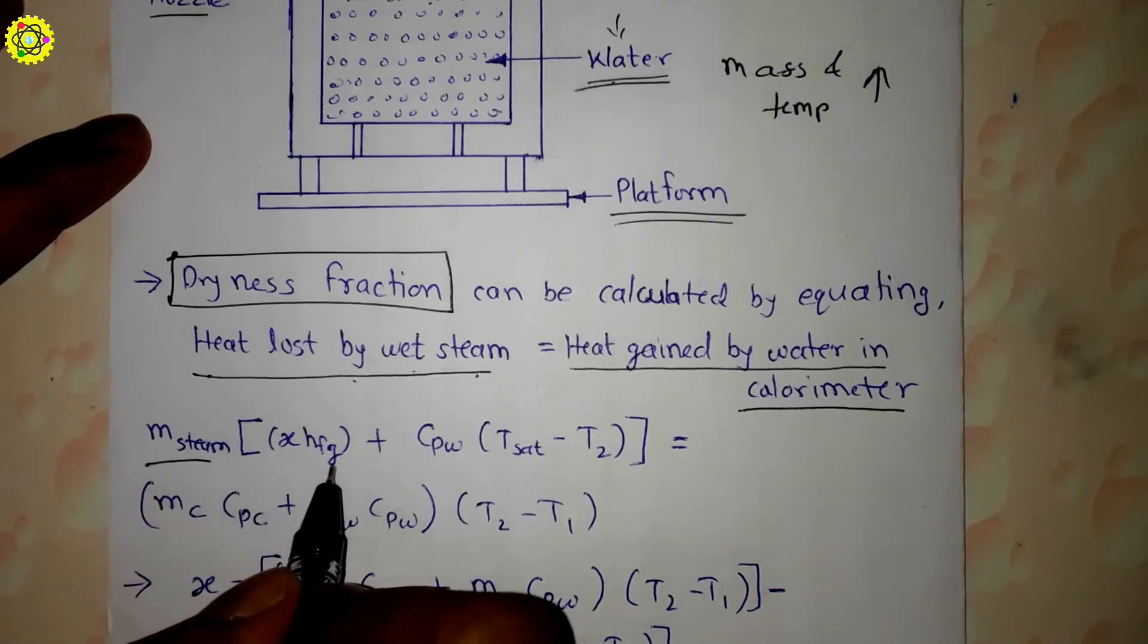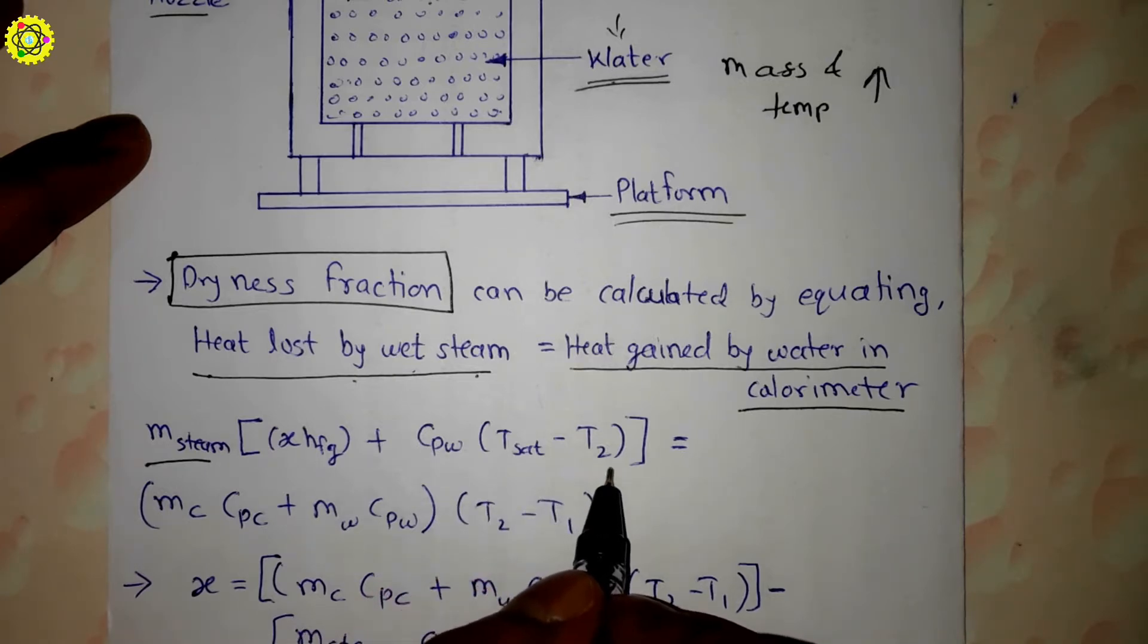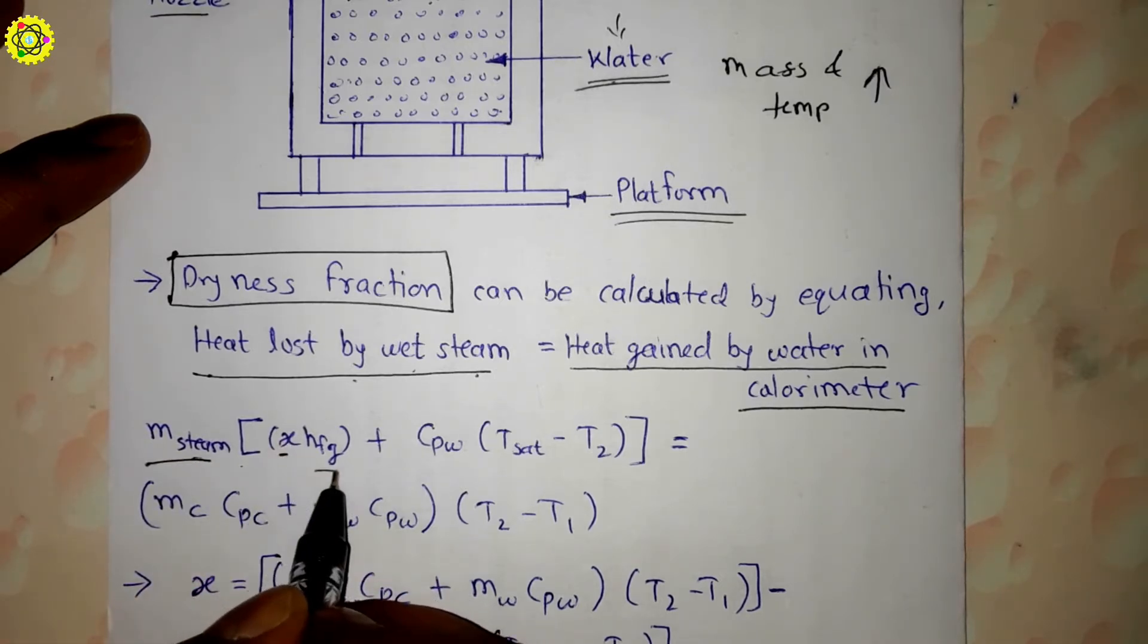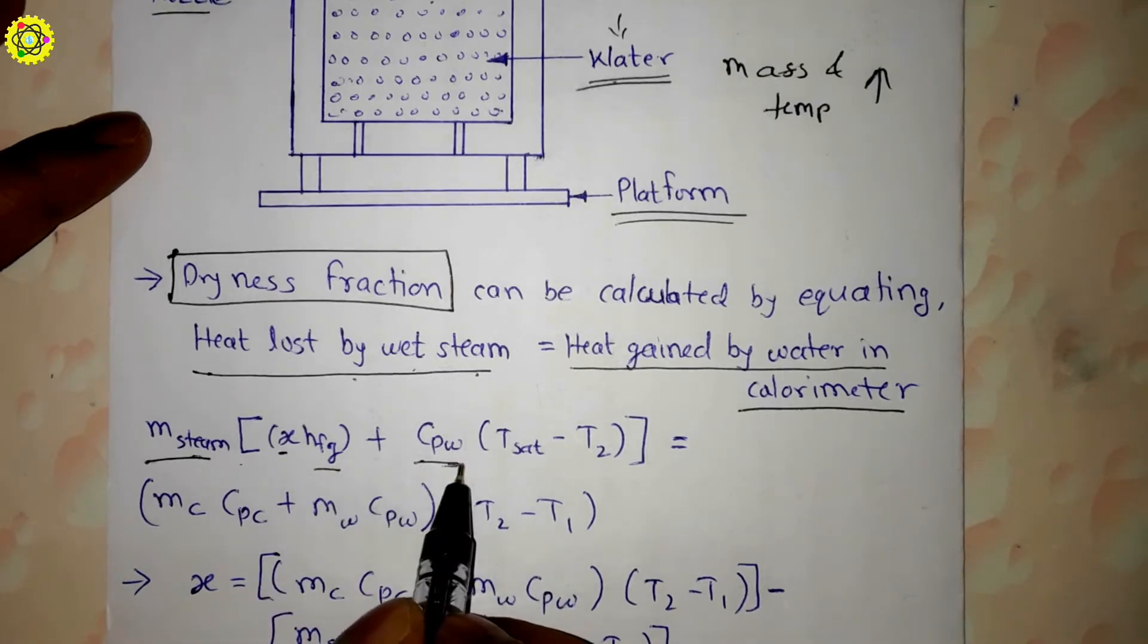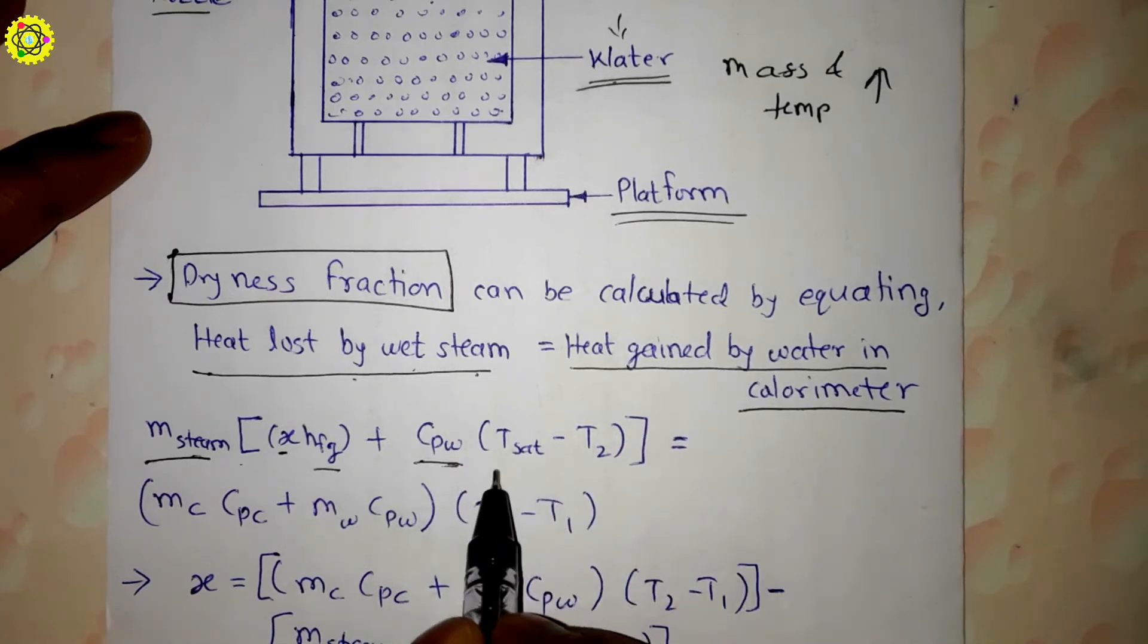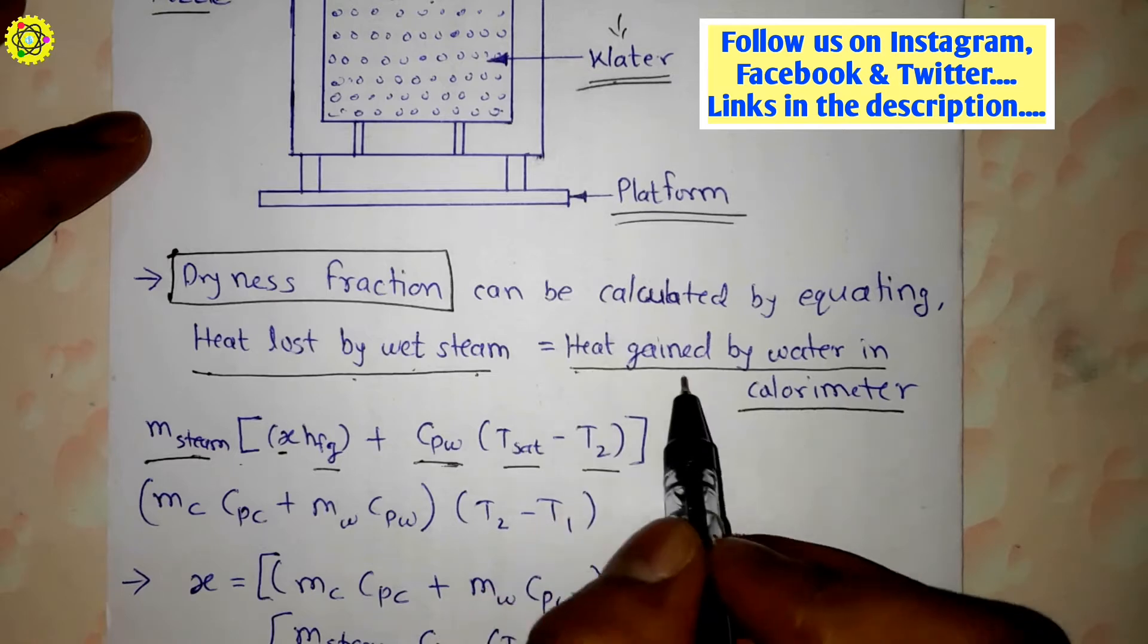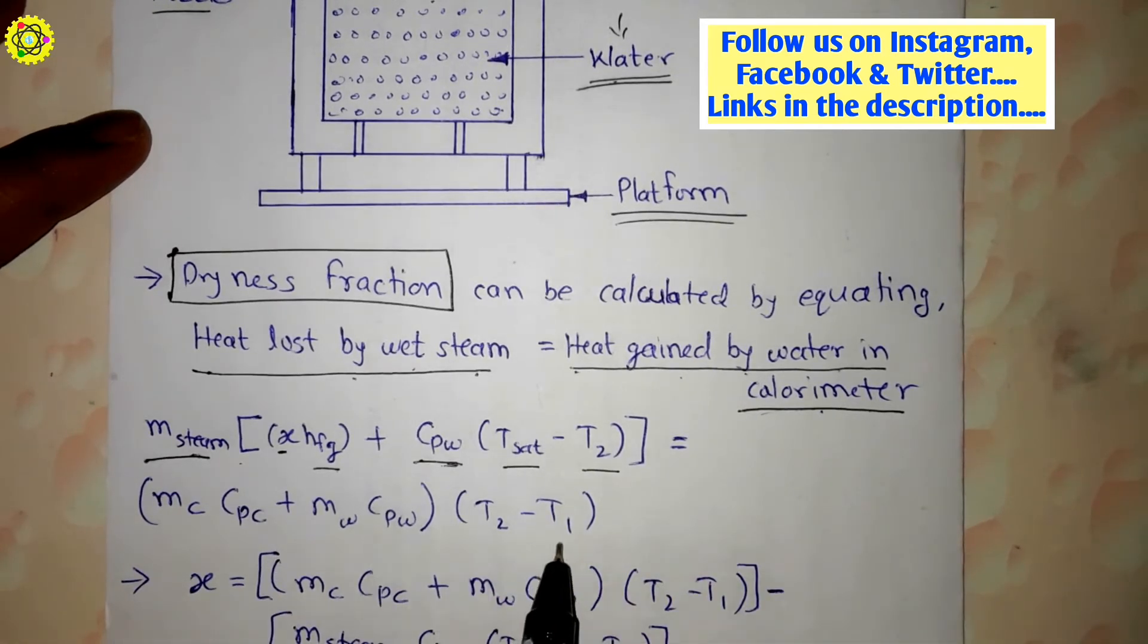Heat loss by wet steam is given by: m_steam × [x·h_fg + c_pw(T_sat - T_2)]. Here m_steam is the mass of steam, x is the dryness fraction, h_fg is the latent heat of steam, c_pw is the specific heat of water in kilojoule per kilogram kelvin, T_sat is saturation temperature and T_2 is the final temperature.